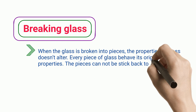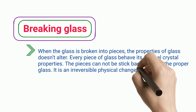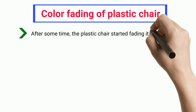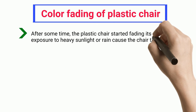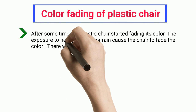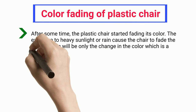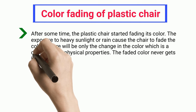The pieces cannot be stuck back together to make proper glass — it is an irreversible physical change. Color fading of a plastic chair: after some time, the plastic chair starts fading in color due to heavy sunlight or rain. There is only a change in color, which is a change in physical properties, and the faded color never returns on its own.